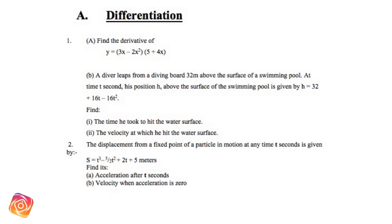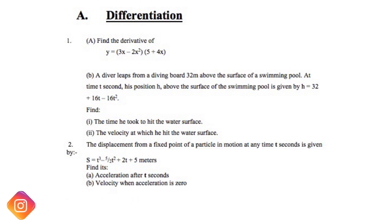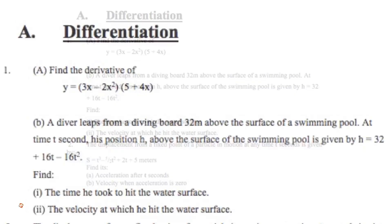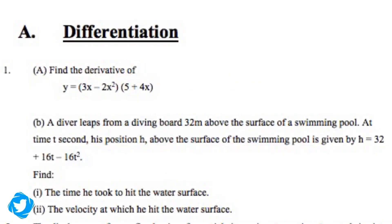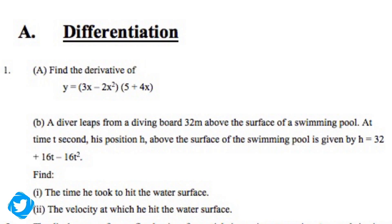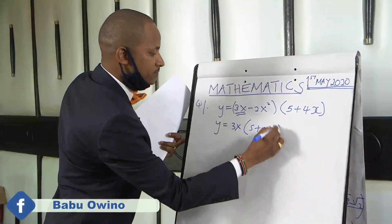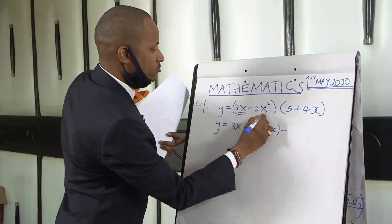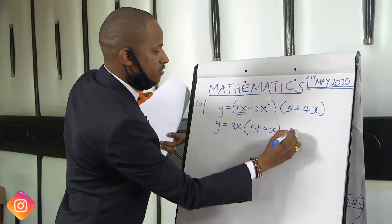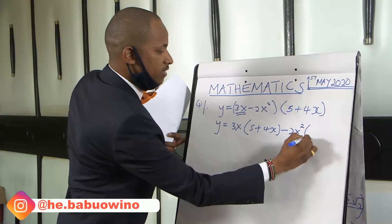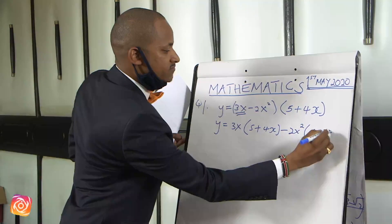The first thing when you are faced with such a challenge in finding the derivative, you first of all expand the bracket. So by expanding the bracket we have y equal to: we take the value on this side which is 3x, multiply by the value on the other side which is 5 plus 4x, minus 2x squared into 5 plus 4x.